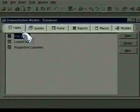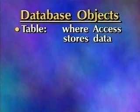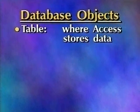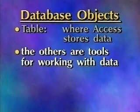Tables are the first type of object. Tables are where Access stores data in a database. As you'll see, you can have more than one table in a database. The other five types of database objects are tools for working with data.